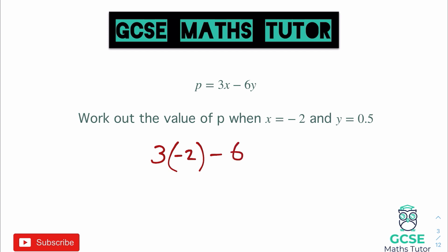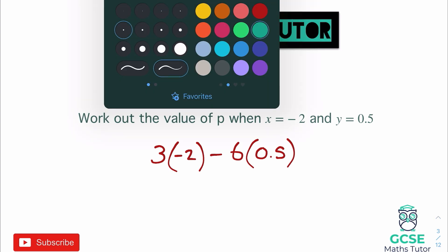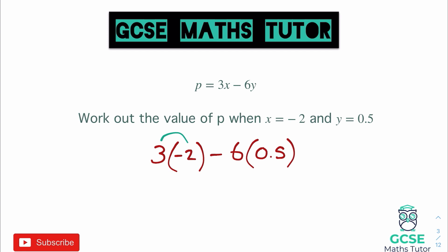We get 3 lots of negative 2, take away 6 lots of 0.5. Expanding those brackets: 3 lots of negative 2 is minus 6. Then we have take away 6 times 0.5 — and 6 times a half equals 3 — so we take away 3. Starting at negative 6 and taking away 3 leaves us with negative 9. So our final answer is negative 9.